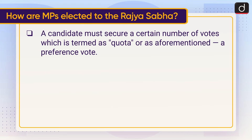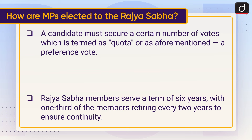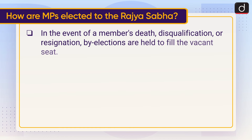A candidate must secure a certain number of votes, which is termed as a quota or preference vote. Rajya Sabha members serve a term of six years, with one third of the members retiring every two years to ensure continuity. In the event of a member's death, disqualification, or resignation, by-elections are held to fill the vacant seat.